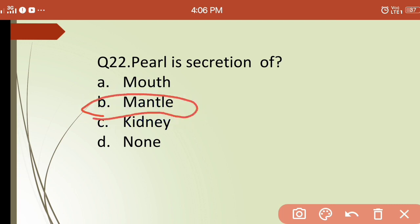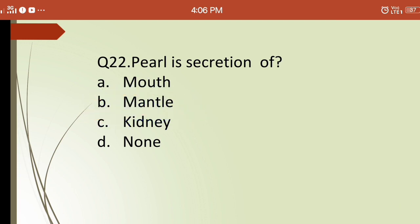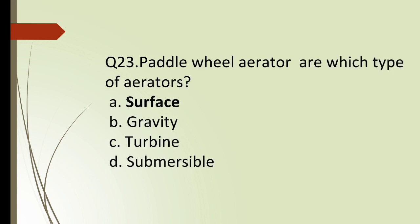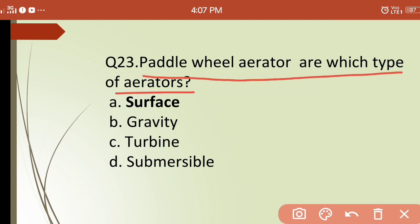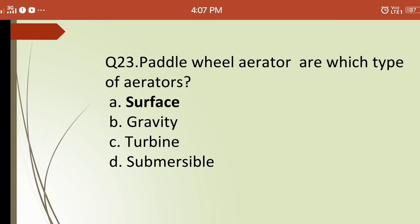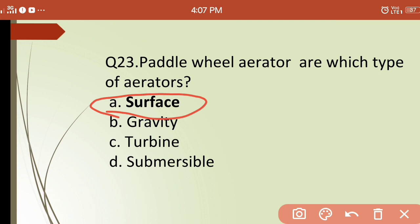Twenty-third question: paddle wheel aerators are which type of aerator? Options are: (a) surface, (b) gravity, (c) turbine, (d) submersible. The correct answer is (a) surface — paddle wheel aerators are surface aerators.